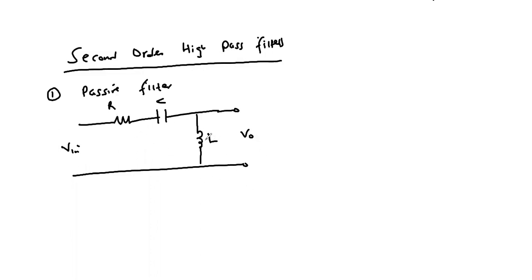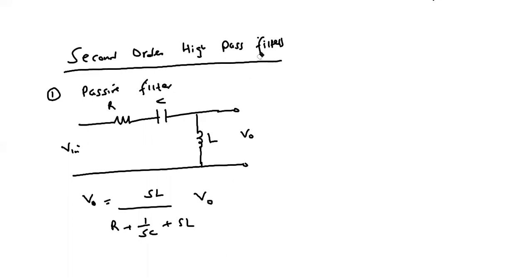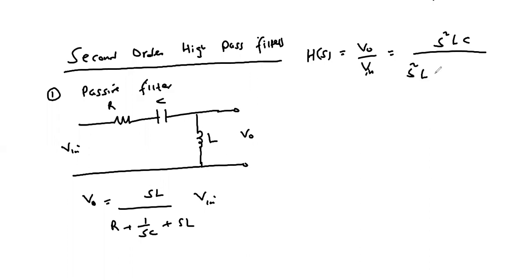A resistor-capacitor-inductor series network with the output taken across the inductor. The output by voltage divider theorem will be given by the drop across the inductor, given by sL over R plus one over sC plus sL, multiplied by Vin. We obtain our transfer function H(s), which is the ratio between the Laplace form of the input and output, which will be equal to — putting the terms on the denominator under common denominator of sC — s²LC on the numerator divided by s²LC plus sRC plus one.